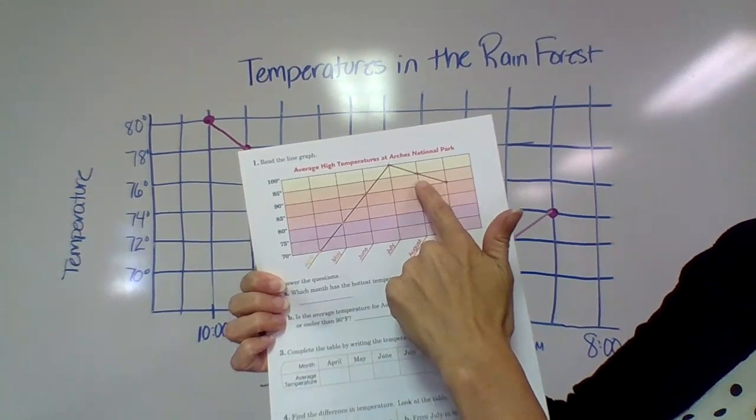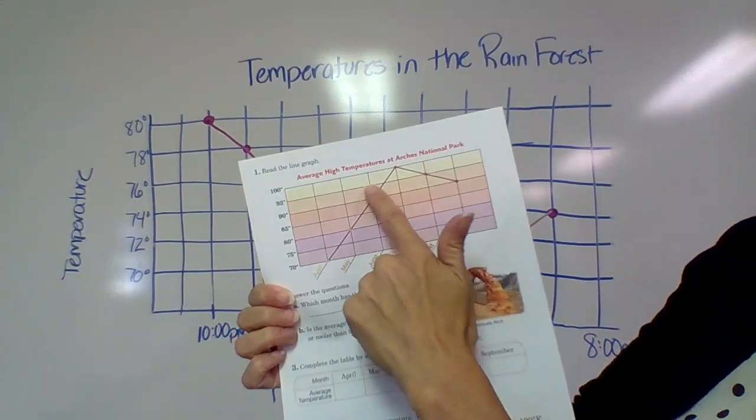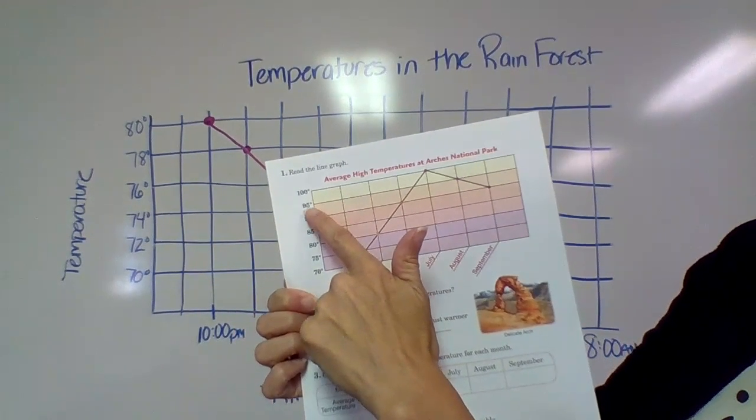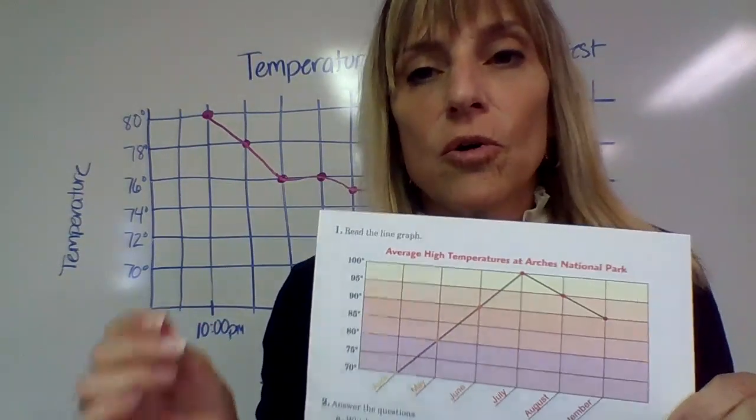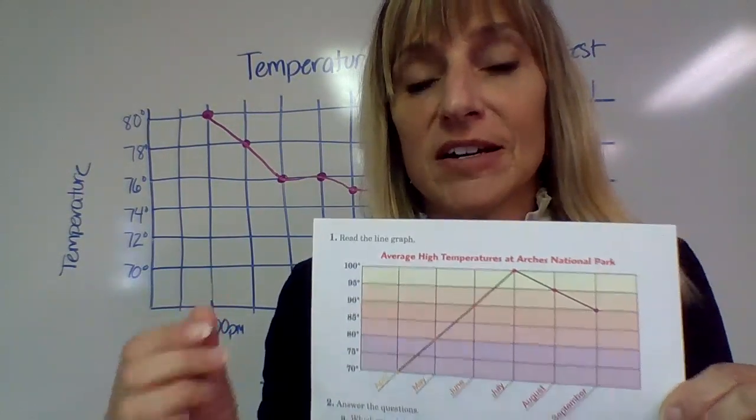So we go to August, we go up here to this dot and we go across and read it. It says 95. Is 95 cooler or warmer than 90 degrees?